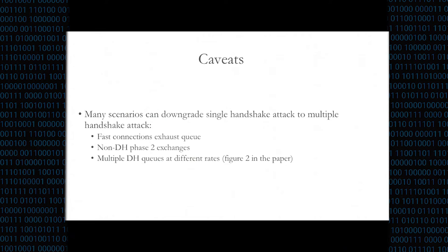There are a few caveats. Some scenarios degrade the single handshake attack back to a multiple handshake attack. First, if you make very quick connections to the ScreenOS box, you can exhaust the queues — they're replenished at one nonce or key per second. When the queue is empty, values are generated on demand, so the key is generated before the nonce. Additionally, if your phase two exchange doesn't use Diffie-Hellman — for example, using a pre-shared key — you still pop a nonce but not a key off the queue, exhausting nonces at a different rate. With multiple Diffie-Hellman queues enabled, a similar situation occurs. But in all these cases, you can still mount the attack; you may just need to observe a few connections first.